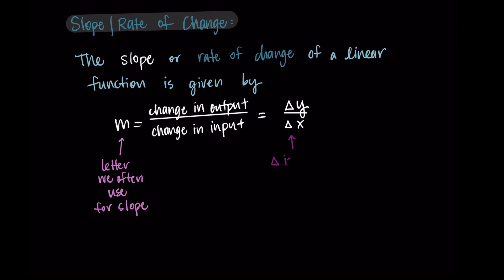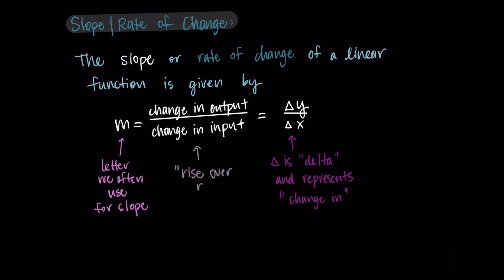That triangle is a delta, and this represents 'change in.' In math, we often use the delta symbol to represent some sort of change. So we have change in output divided by change in input, which we could also write as delta y over delta x, given that y is the output. If you've seen slope or rate of change before, you may have heard 'rise over run' — rise being the vertical change and run being the horizontal change, so it's the vertical change divided by the horizontal change.